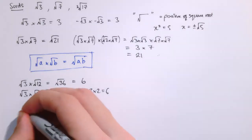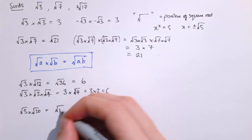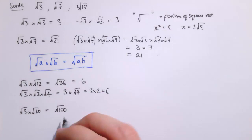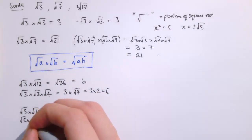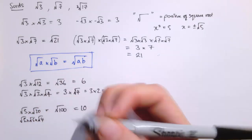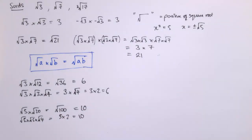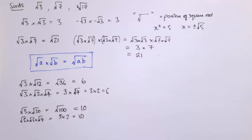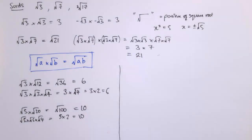Another example: the square root of 5 times the square root of 20 is the square root of 100, which is 10. Similarly we could write that as root 5 times root 5 times root 4, giving 5 times 2 = 10. It's really useful when a perfect square appears, because it means we can simplify nicely. There are other situations where we can force a square factor out of a number to simplify it.